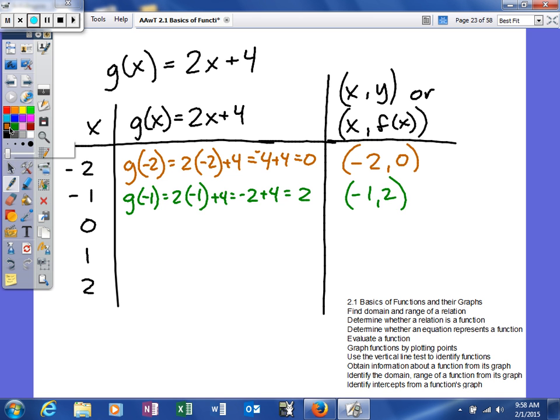So as you can see, what we're doing is plugging in the values for our x into our function and simplifying the math. When we get our answer, we're writing it as an ordered pair, where the x value comes first, and then our function value, or your y, comes second. That's basically what we're doing.